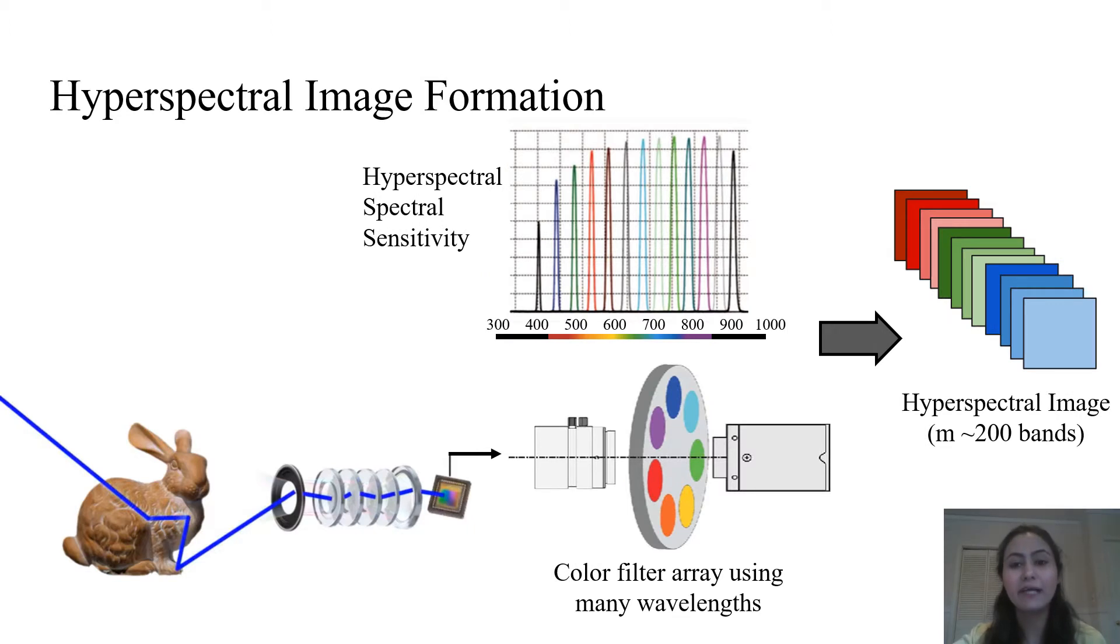On the other hand, the hyperspectral imaging system digitizes the incoming signal and captures the information in M number of bands throughout the spectrum. Currently, commercially available hyperspectral cameras can capture more than 200 bands and thus provide large amounts of high dimensional data.